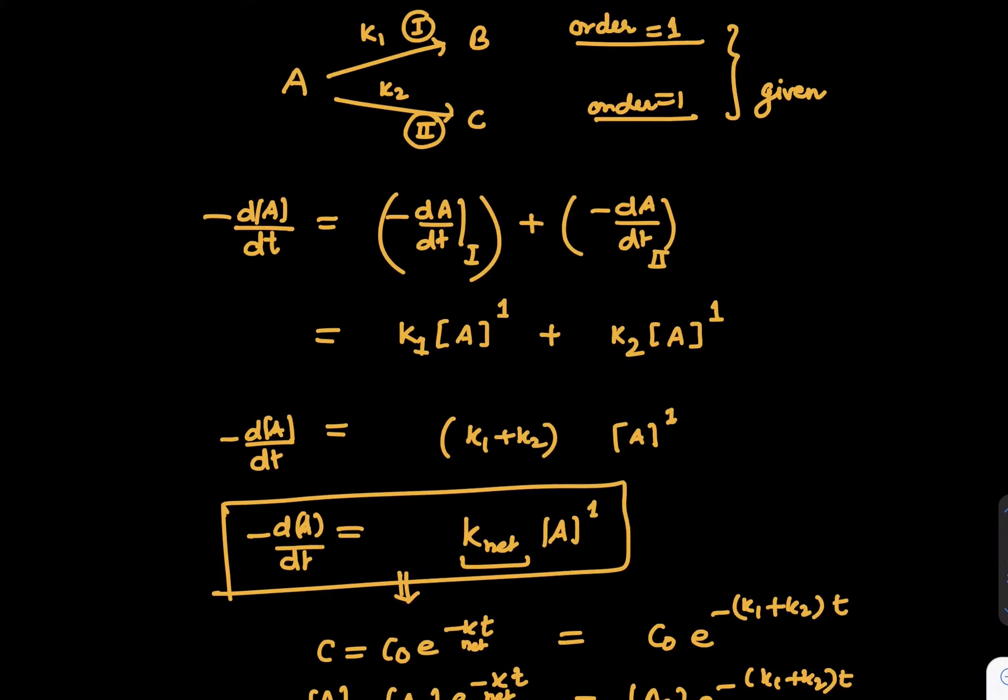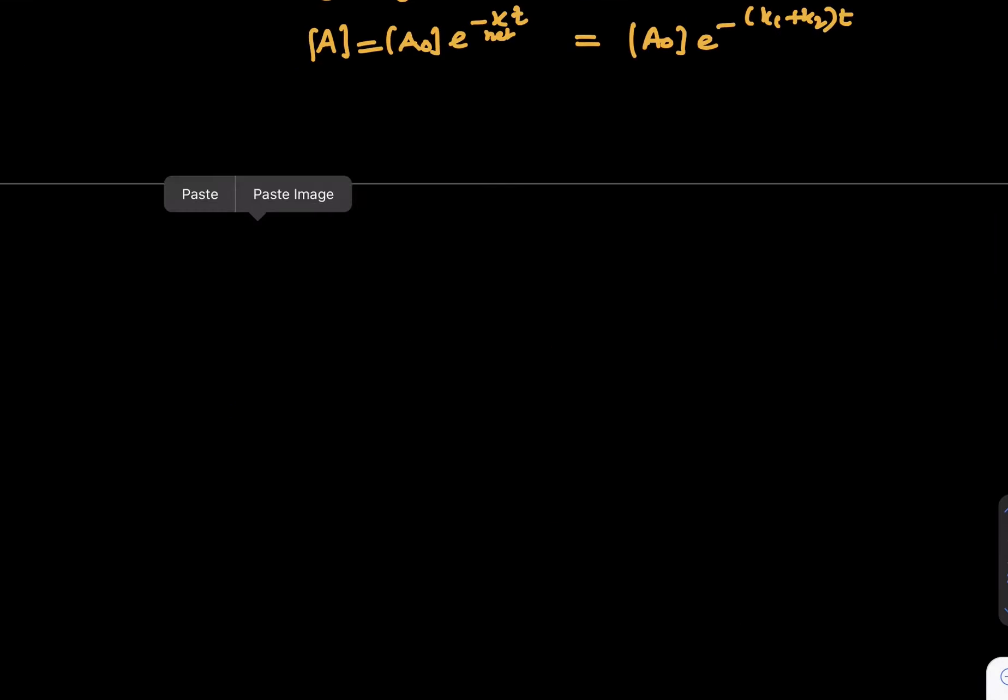Now, one more important aspect here. When we talk about concentration of B and C, how will it work out? So look at this result. We can say dB over dt, concentration of B, change in concentration of B over period of time t, is equal to k1 of A, whereas dC over dt is k2 times A. So both are 1, 1 power.